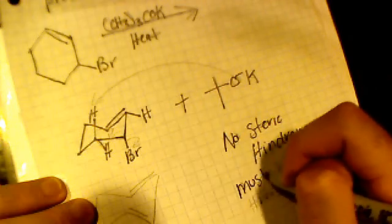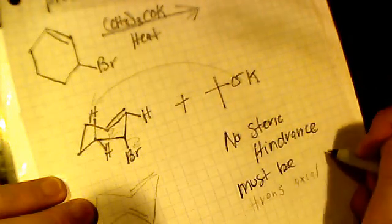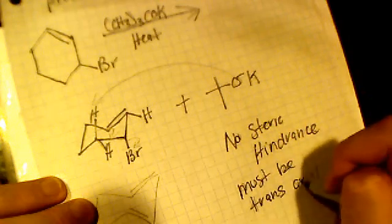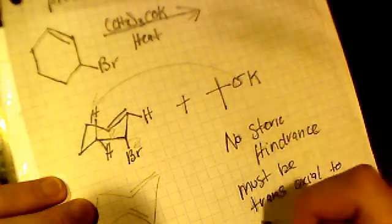And the hydrogen must be trans, trans-axial to bromine, right?